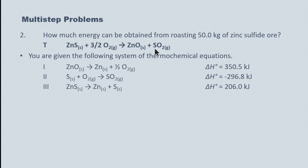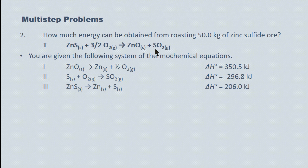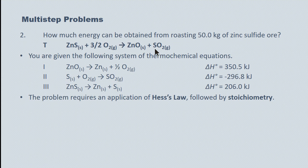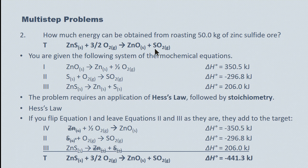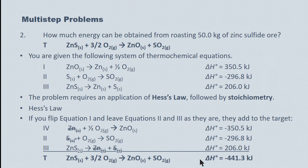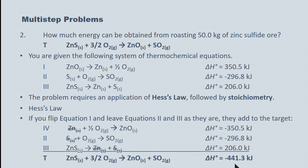So the first piece of this will be a Hess's law solution. And the second piece, again, will be a stoichiometry piece. Let's look at Hess's law, and then let's do some stoichiometry. I think in one fell swoop, I've done the Hess's law piece for you. You'll see I've flipped equation one, I left equation two and three alone, and then I added them to the target. We end up getting an enthalpy for the equation of negative 441.3 kilojoules. And that's to roast a single mole of the zinc sulfide ore.